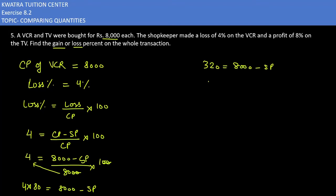If we take SP to the left side, it will be positive. So what is your value? 8,000 minus 320 will give you 7,680. The selling price of VCR is 7,680.